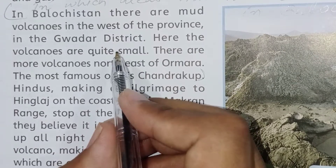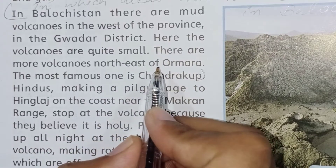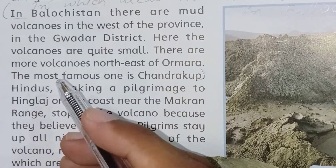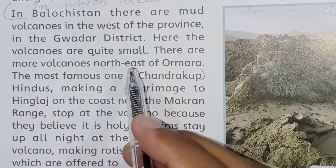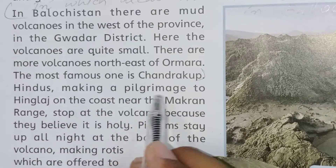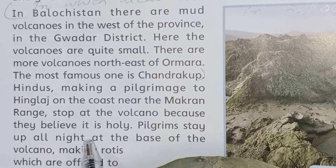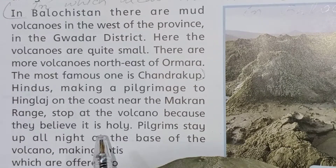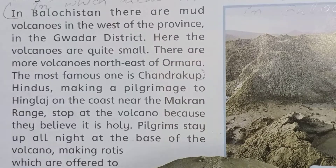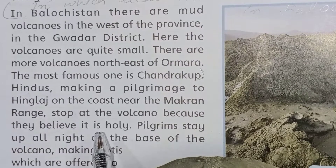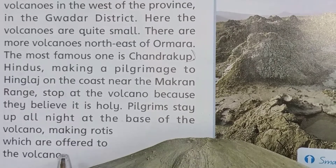There are more volcanoes north-east of Ormara. Hindus make a pilgrimage to Hinglaj on the coast near the Makran range and stop at the volcano because they believe it is holy. Hindus stay up all night at the base of the volcano, making rotis which are offered to the volcano.